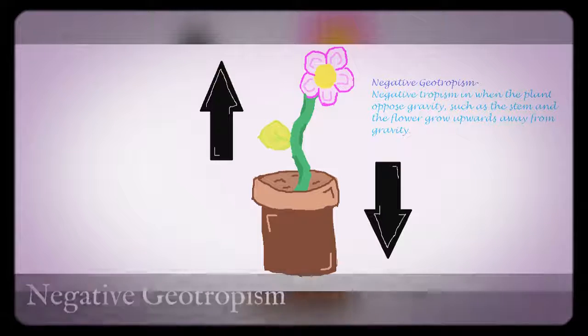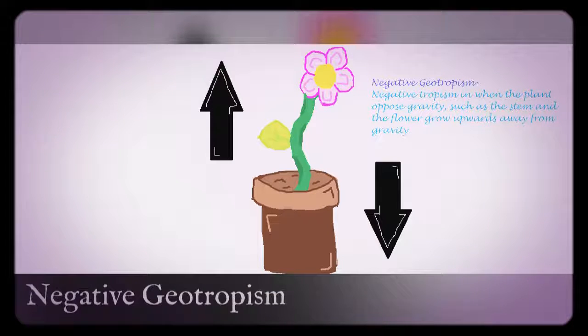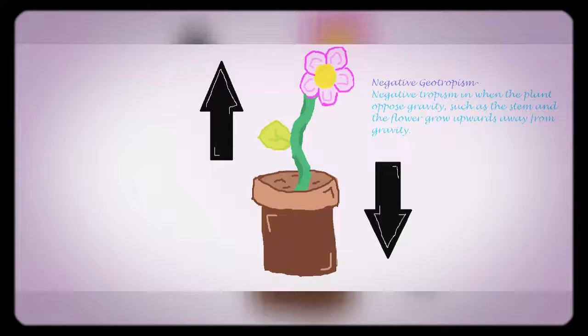There are two types of geotropism. The first is negative geotropism. Negative geotropism is when the plant responds to gravity by growing upward, away from gravity, such as a stem and flower.